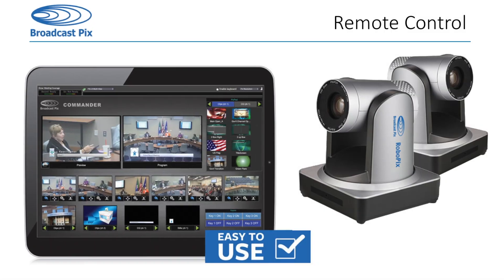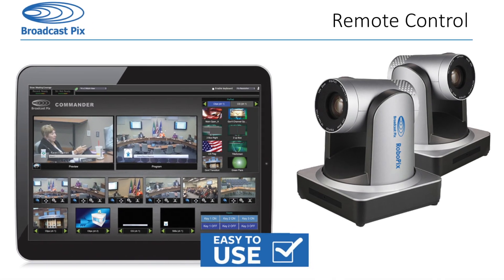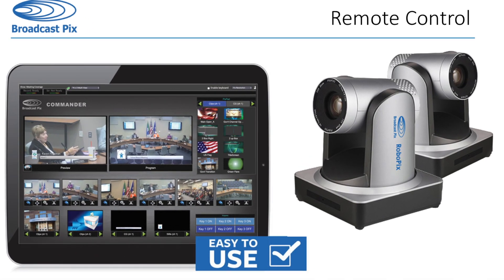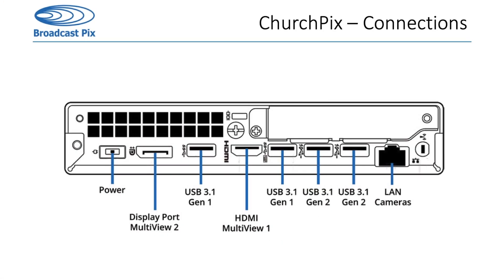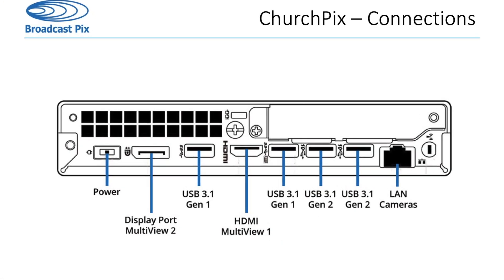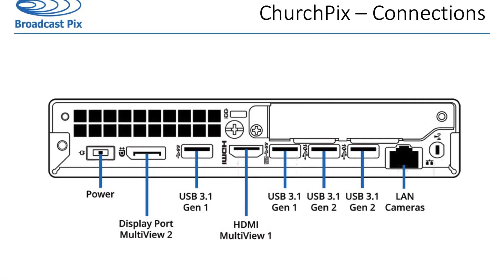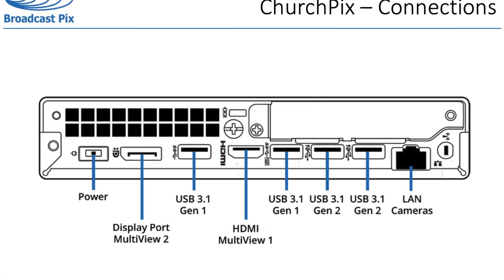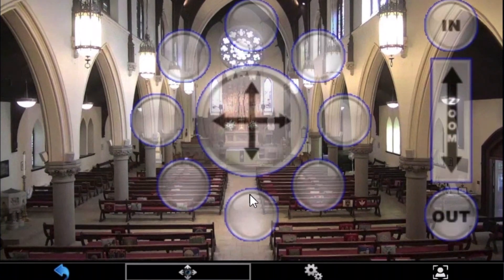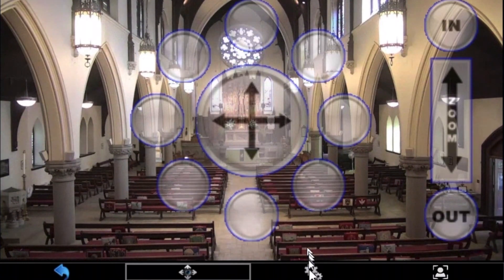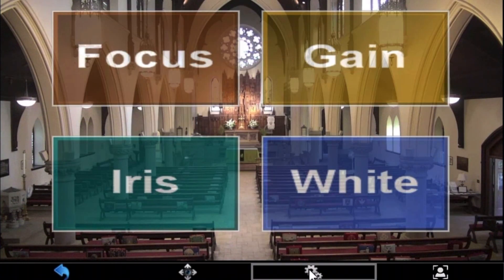The system includes two RoboPix Pan, Tilt, Zoom robotic cameras. Attach cables with the included network switch, and video, control, and power are sent as they are pre-configured.